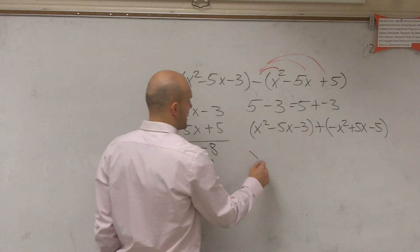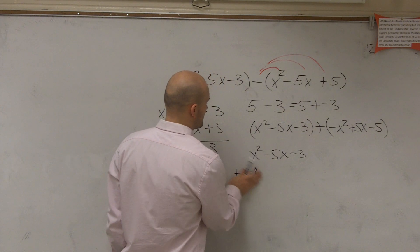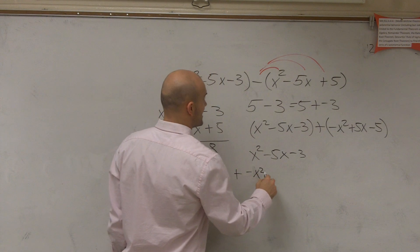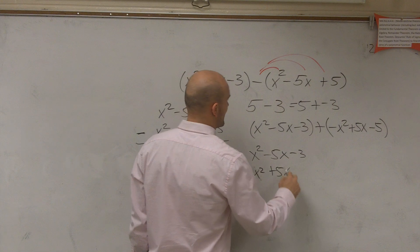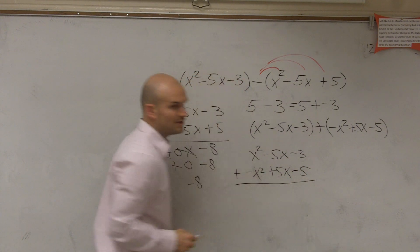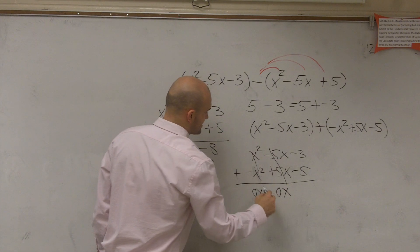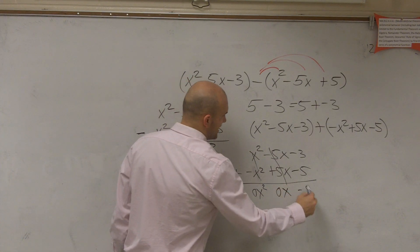Now I have x squared minus 5x minus 3 plus a negative x squared plus 5x minus 5. And now when you add these up, you say, oh, that goes to 0x. That goes to 0x, that's 0x squared, and that goes to negative 8.